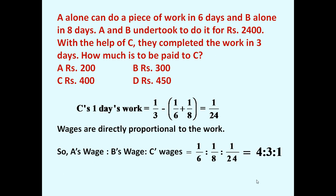So multiplied by 24, we get 4:3:1. It means if they receive 8 rupees, A will get 4, B will get 3, and C will get 1. Out of every 8 rupees, C will get 1 rupee.